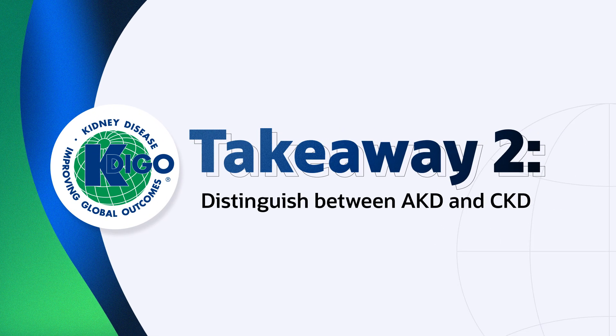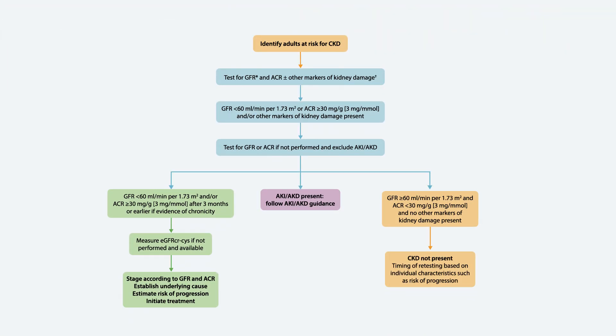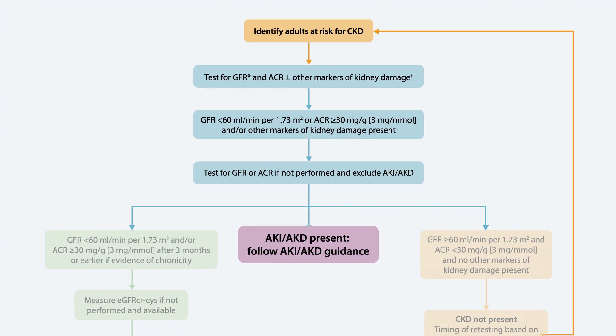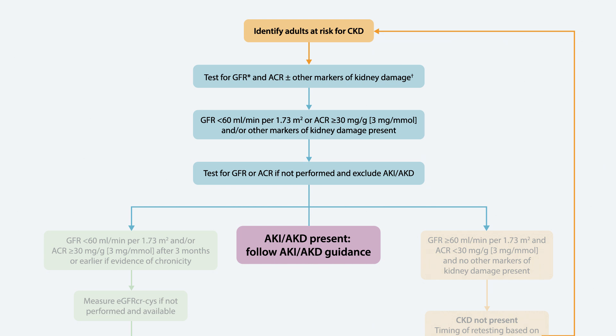It's also important to establish chronicity and to distinguish between acute kidney disease and chronic kidney disease. The rationale for defining chronicity is to differentiate CKD from acute kidney diseases including acute kidney injury, which may require different guidance related to timelines for initiation of treatments, different interventions, and have different etiologies and outcomes.